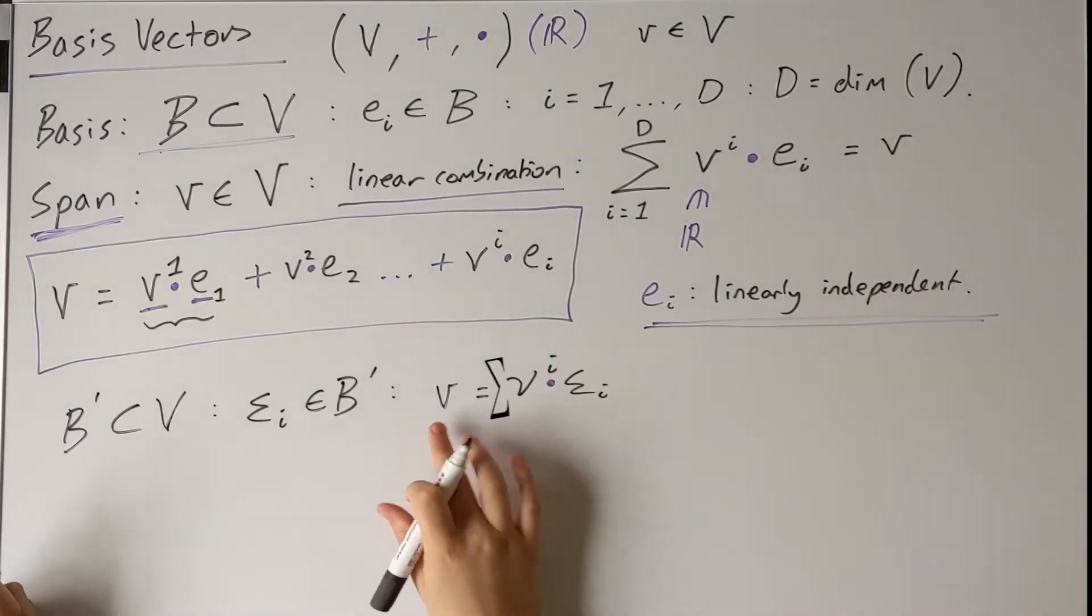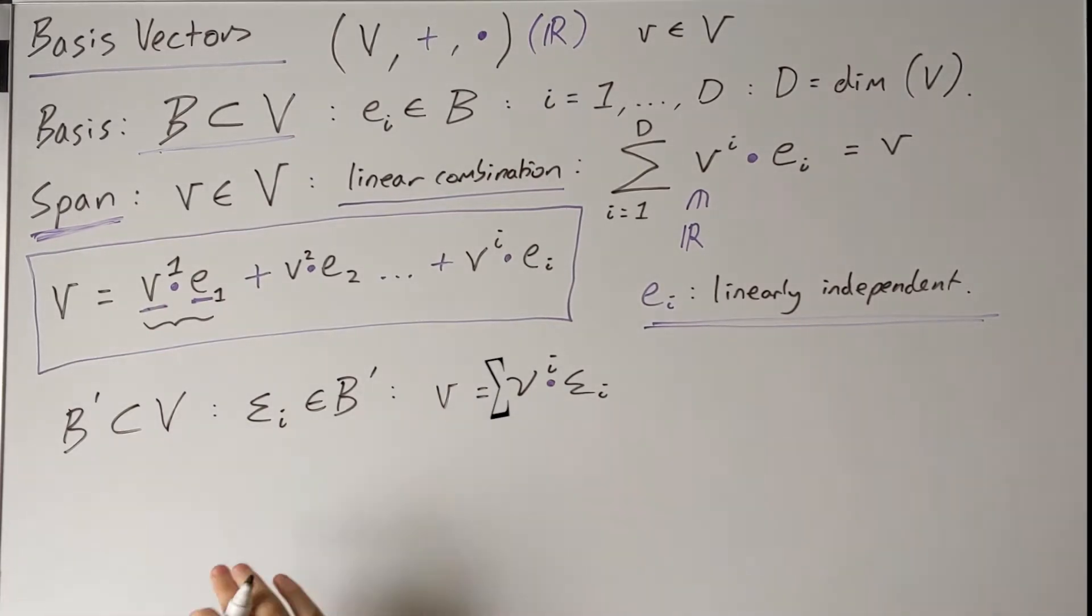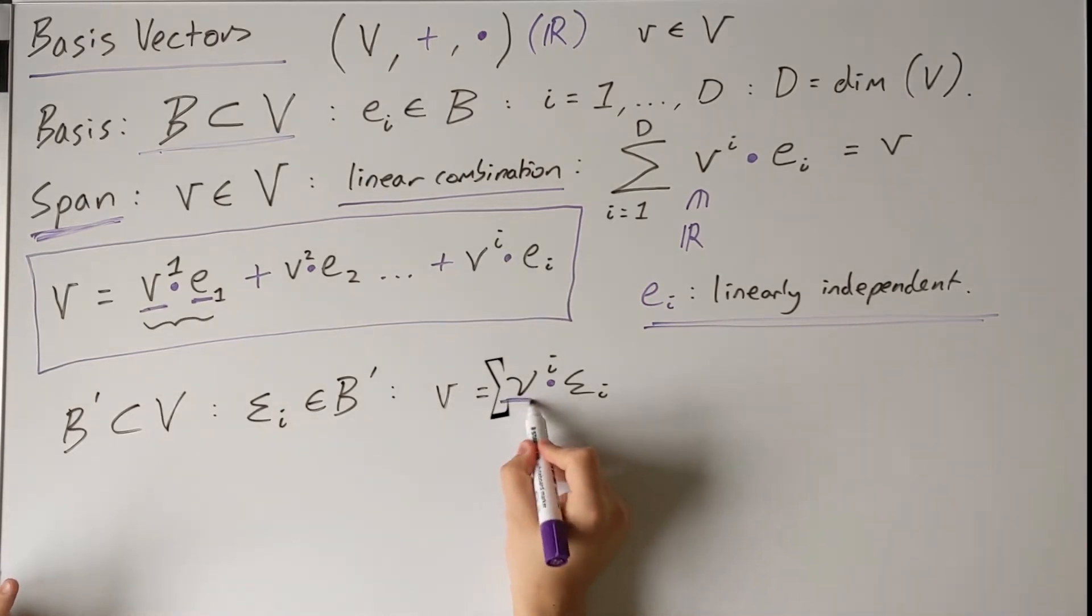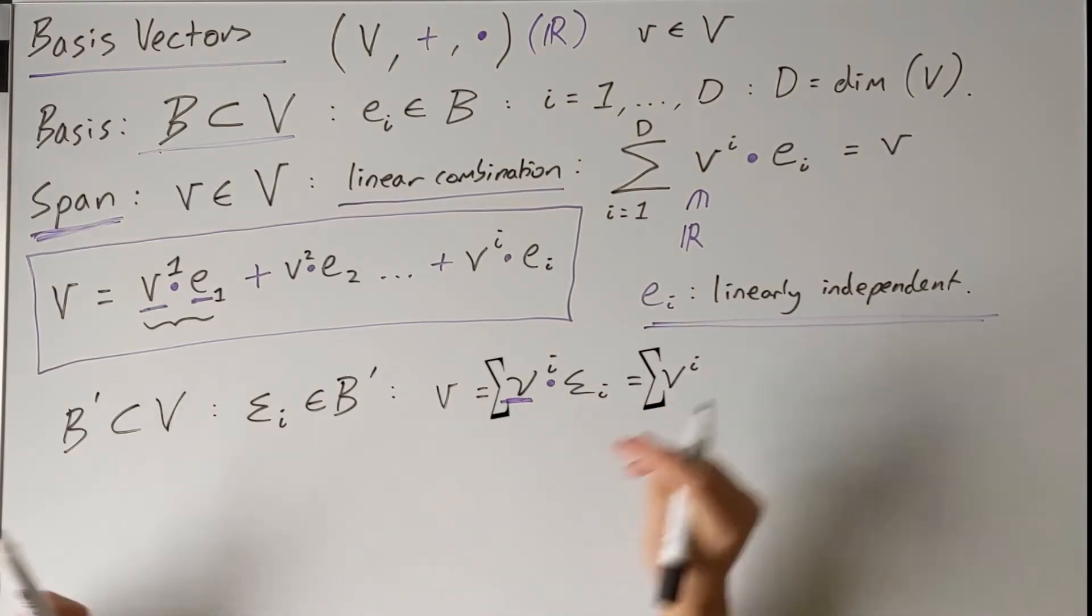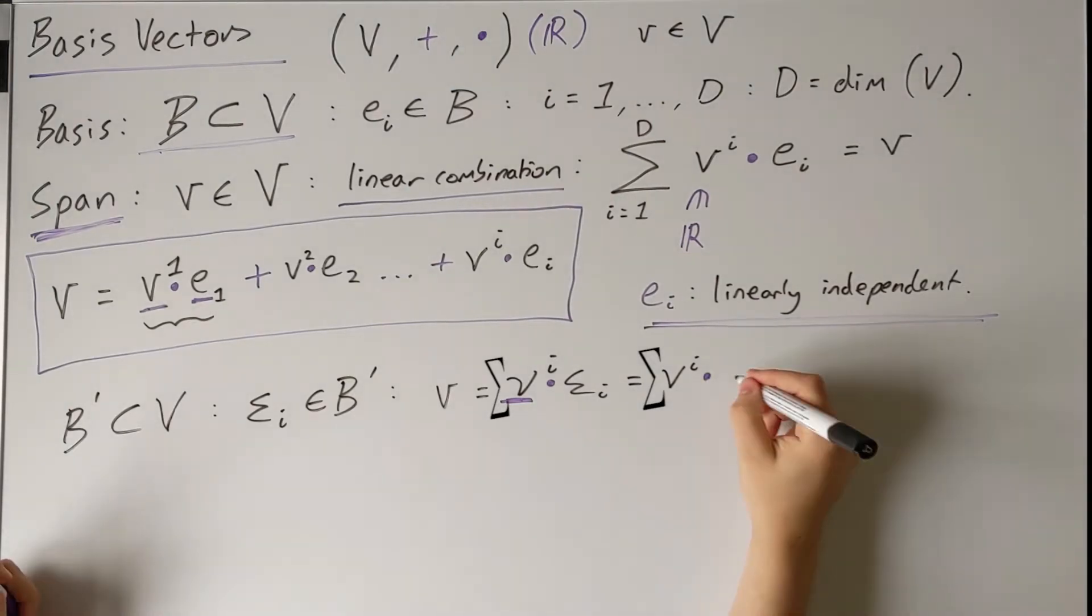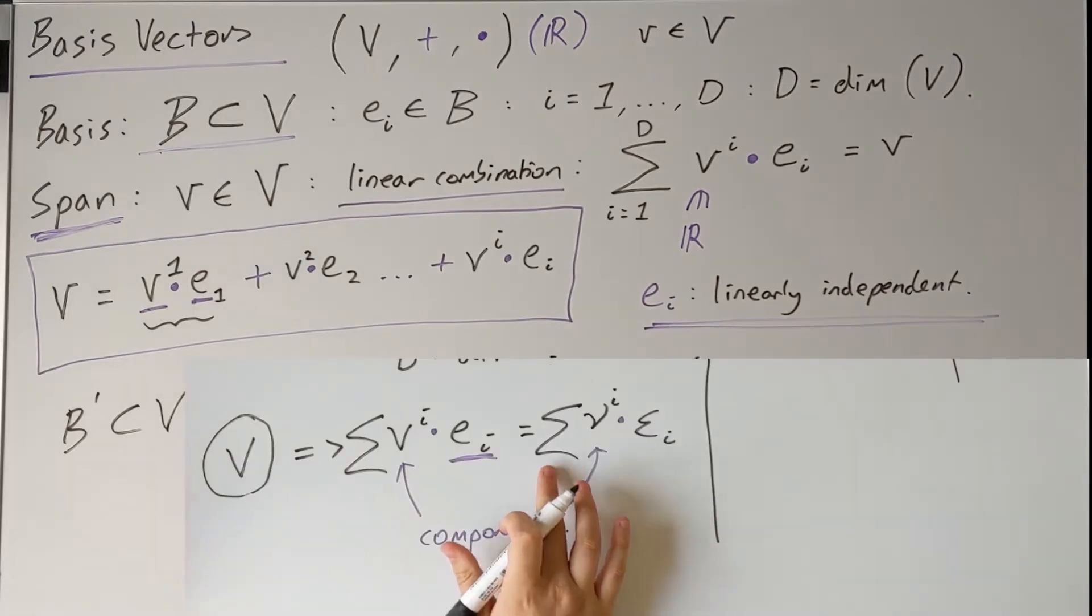So I'll call its components v̄^i. So we're talking about the same vector. We're just expressing it in terms of a new basis, this epsilon basis. And through the i's of this basis, it will have some other set of components, v̄^i. But it's the same vector as before. So it's got to be equal to the original expression we had in the e basis.